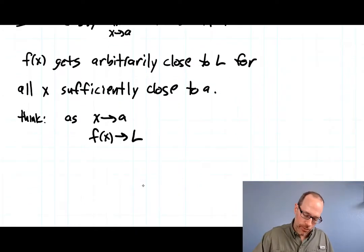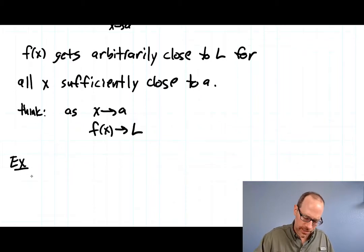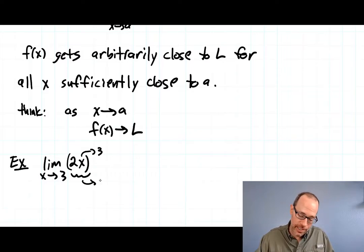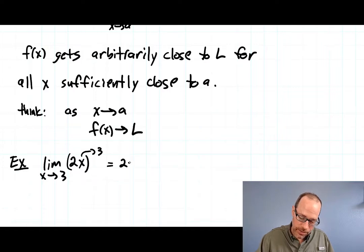Let's do a couple examples. The first one: the limit as x goes to 3 of 2x. As x is zipping along to 3, what is 2x getting close to? Well, if x is getting closer to 3, this whole thing is getting closer to 2 times 3, which is 6.